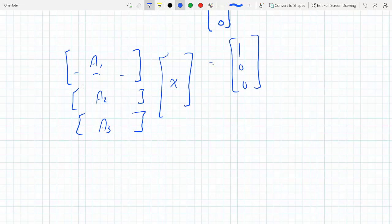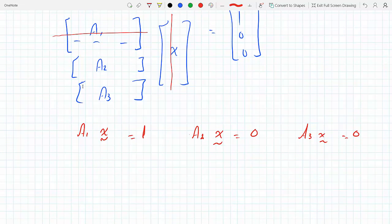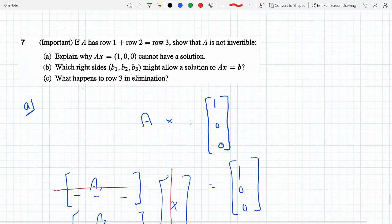Now what does this mean? Well, this means that A1 times matrix X, row 1 times matrix X, has to equal 1, because that's how you multiply a matrix row times column. And this means that A2 times X has to equal 0, and A3 times X, so matrix X, has to equal 0.